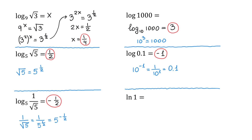The last logarithm we will evaluate is the natural logarithm of 1. Natural logarithm is another special logarithm where the base is E. Recall that E is a constant that is approximately 2.7. If the base is E, then E to what power is equal to 1? We know that a non-zero number raised to 0 equals 1. Then, we can say that the natural logarithm of 1 equals 0.